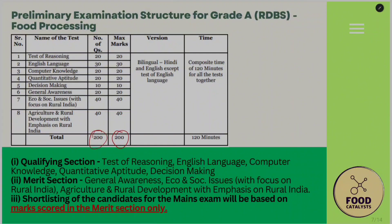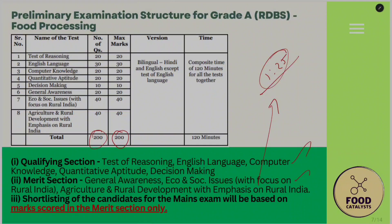The preliminary exam sections are divided into two types: qualifying sections and merit sections. For qualifying sections, you only need to achieve the pass mark. For merit sections, your scores are used to calculate the 1:25 shortlisting ratio. The merit sections are: General Awareness, Economic and Social Issues, and Agriculture and Rural Development with emphasis on Rural India — these three are the most important to focus on.